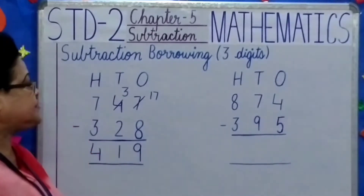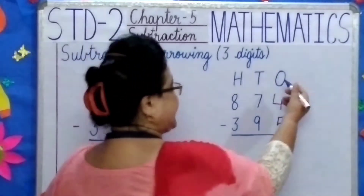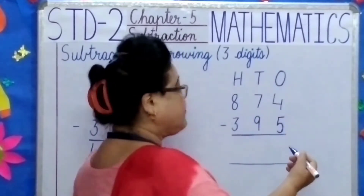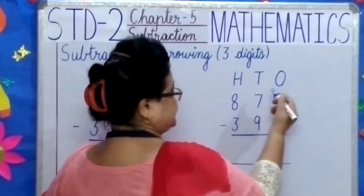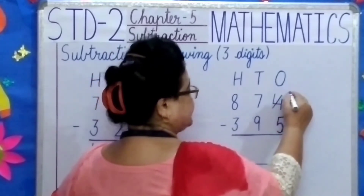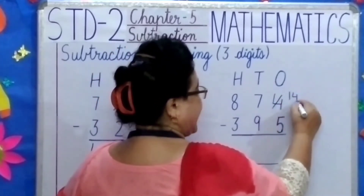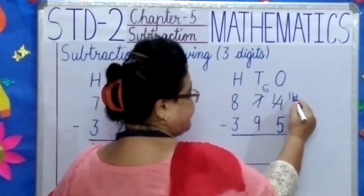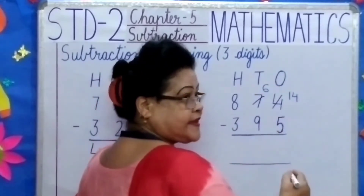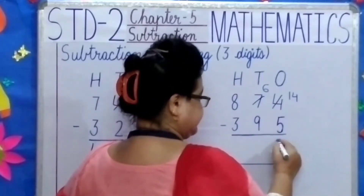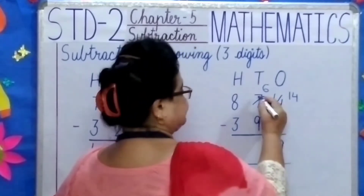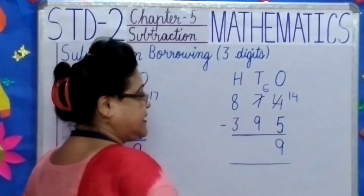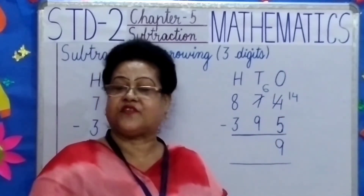Now come to the next one. Ones place: 4 is smaller, 5 is bigger. What do we do? Borrow one from the tens place. This will become 14 ones and this becomes 6 tens. Now, 14 ones minus 5, what do we get? 9. Now come to the tens place. We have 6 and we have 9. Can we subtract 6 from 9? No.